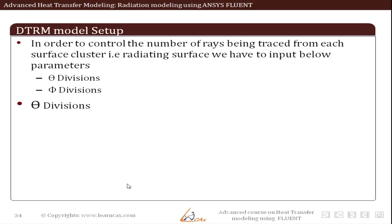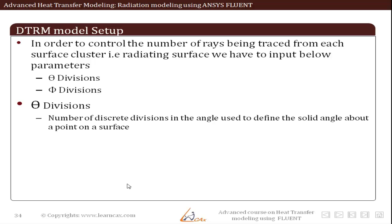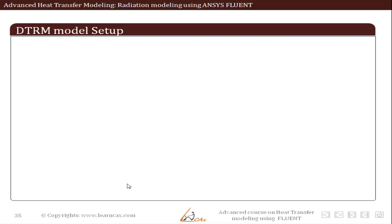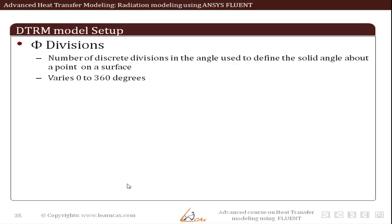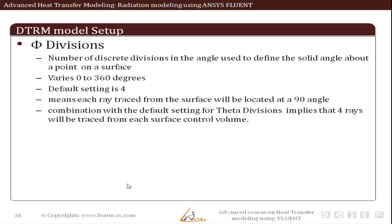We can also control the number of rays traced from each surface cluster using the theta and phi divisions. The theta division is the number of discrete divisions in the angle used to define the solid angle about a point on a surface; the default is 1, meaning one ray is traced per surface. The phi divisions define the solid angle from 0 to 360 degrees, with a default value of 4, meaning each ray is located at 90-degree intervals. The combined default of theta=1 and phi=4 means 4 rays are traced from each surface control volume. We should at least double these defaults to get meaningful results.